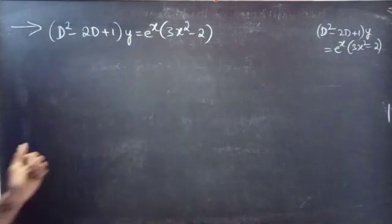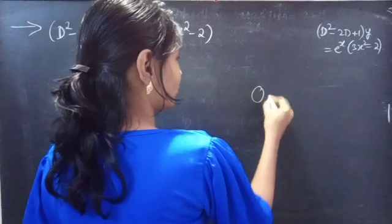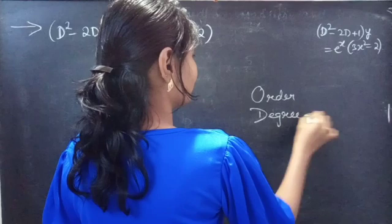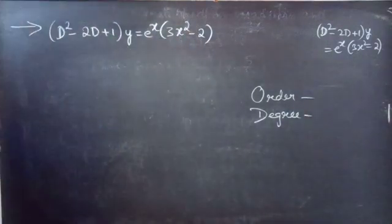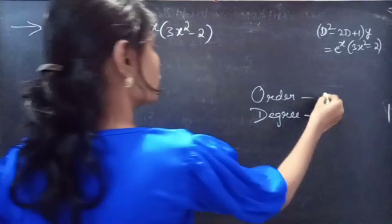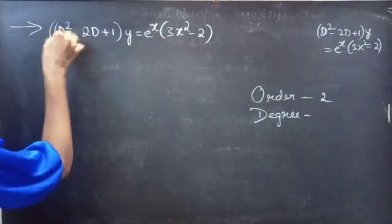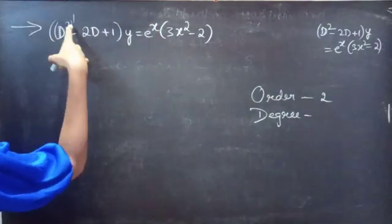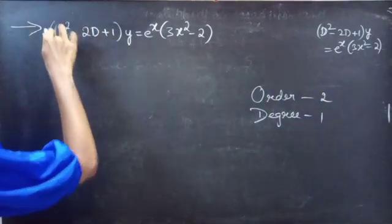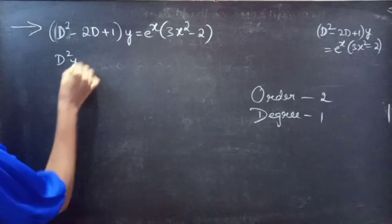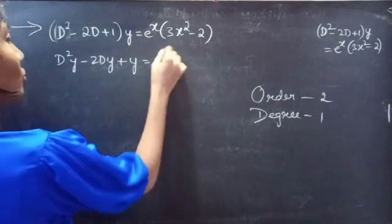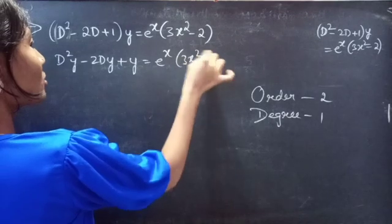Firstly, let's find the order and degree of the given differential equation. Identify the highest derivative — here D² is the highest derivative. So our order will be 2, and the highest power of the highest derivative is the degree, which is 1. We can write the given differential equation as D²y - 2Dy + y = e^x · (3x² - 2).